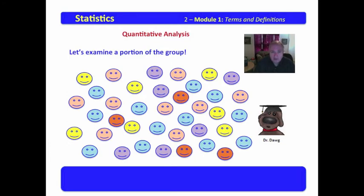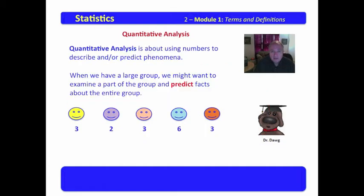Let's examine a portion of that group that we saw just a moment ago. We'll select it with a circle. In this circle, we have selected a part of a much larger group. When we look at this part, we might want to examine it and predict facts about the entire group. We notice in the part that we selected that we have three yellow, two lavender, three tan, six blue, and three orange.